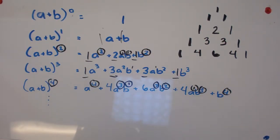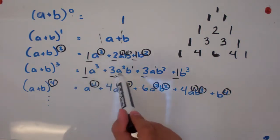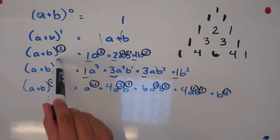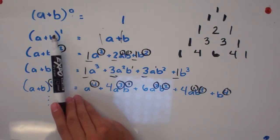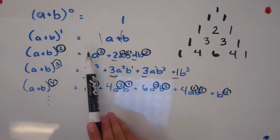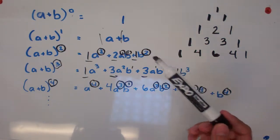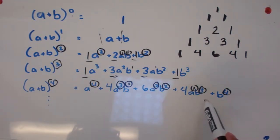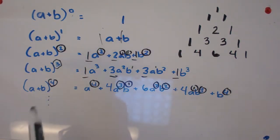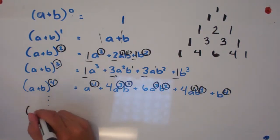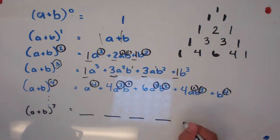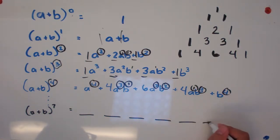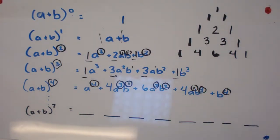Another pattern — and this is the last one — is the number of terms. For the fourth power we have five terms; for the third power we have four terms. Looking at our exponent: zero gives one term, one gives two terms, two gives three terms, three gives four terms. The number of terms is always one more than our exponent. So if we have a plus b to the seventh power, we're going to get eight different terms.